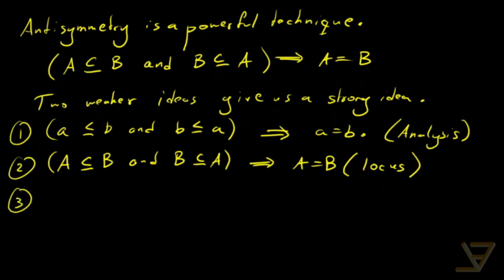And the third example is divisibility. So if a divides b and b divides a and they're positive integers, then that implies a equals b. And we need this often in number theory.